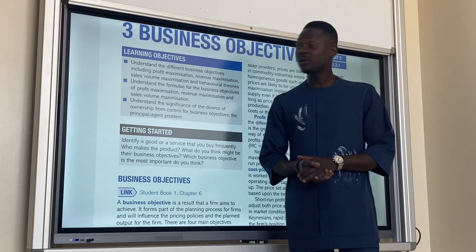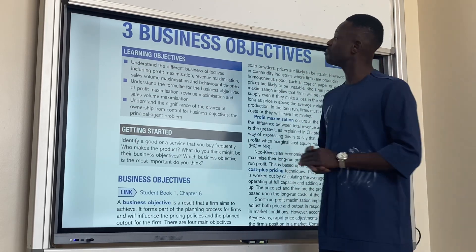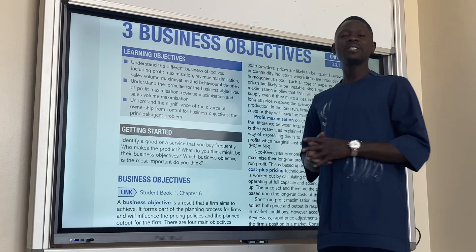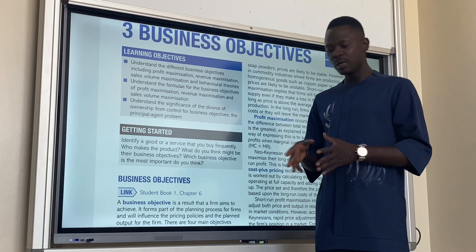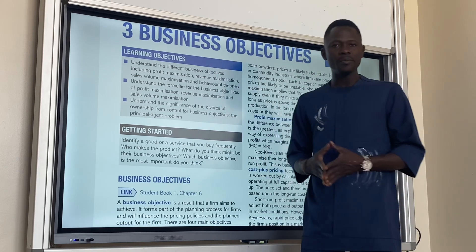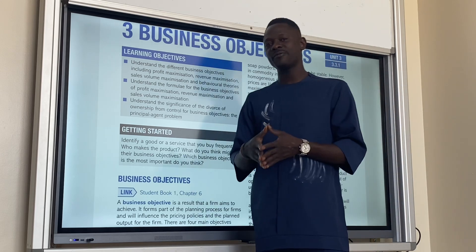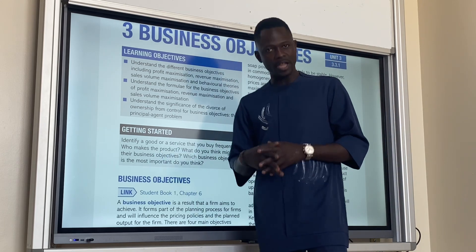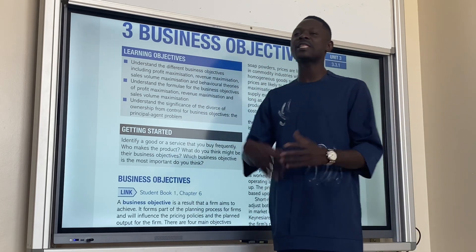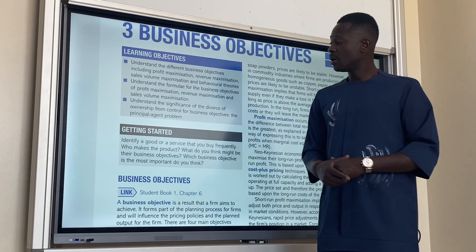We are still on the campus A level. The topic today is business objectives. When we talk about business objectives, we are talking about what a firm or a business is aiming to achieve over a period of time. That's what business objectives is — what you are targeting, what you want to achieve over a period of time.